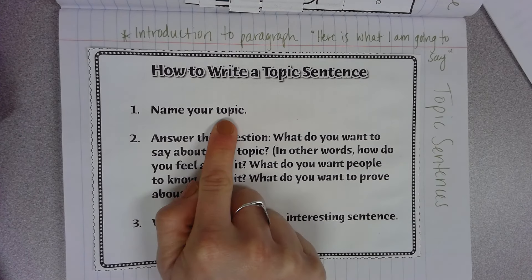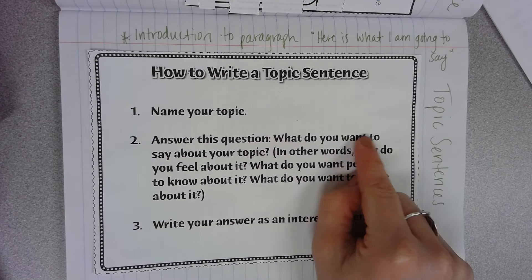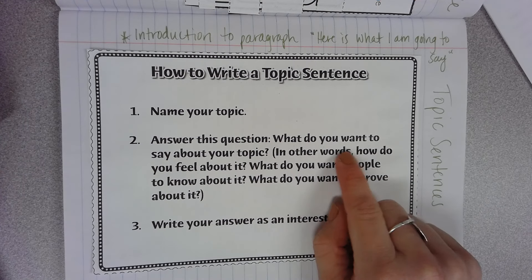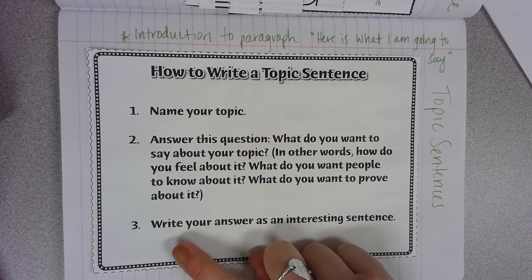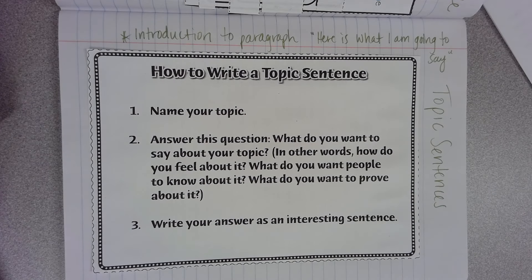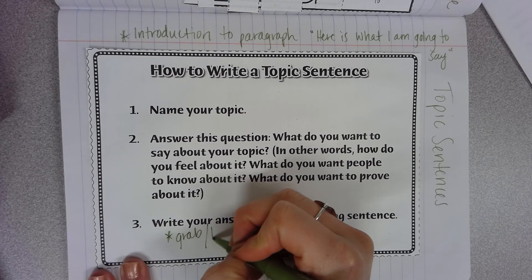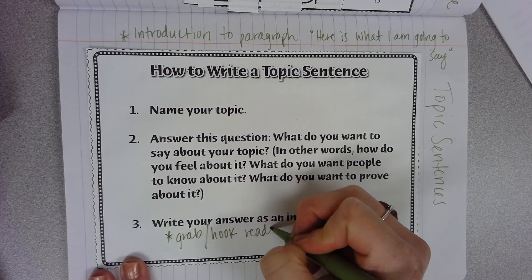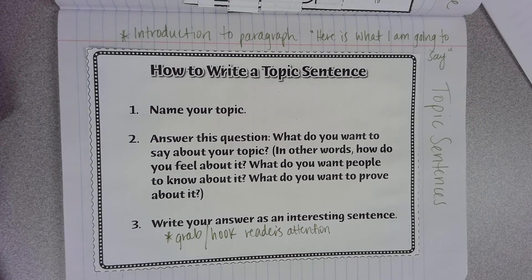You want to make sure you name your topic in your topic sentence, and then answer this question: what do you want to say about your topic? In other words, how do you feel about it? What do you want people to know about it? What do you want to prove about it? Then write your answer as an interesting sentence. A lot of the time, topic sentences grab or hook the reader's attention so that they're interested to read more in the rest of your paragraph.